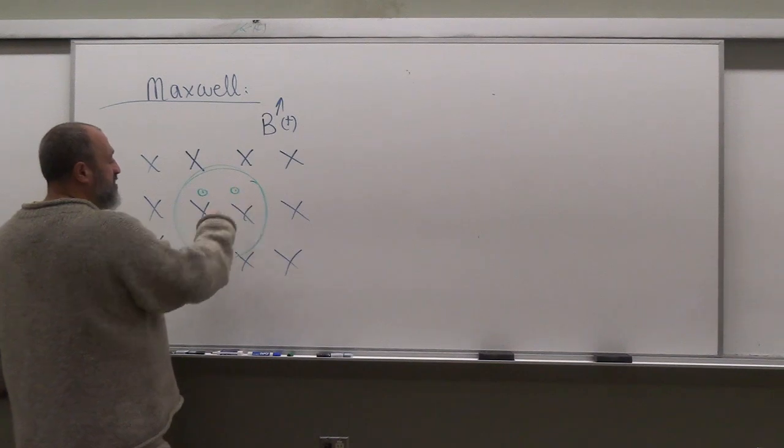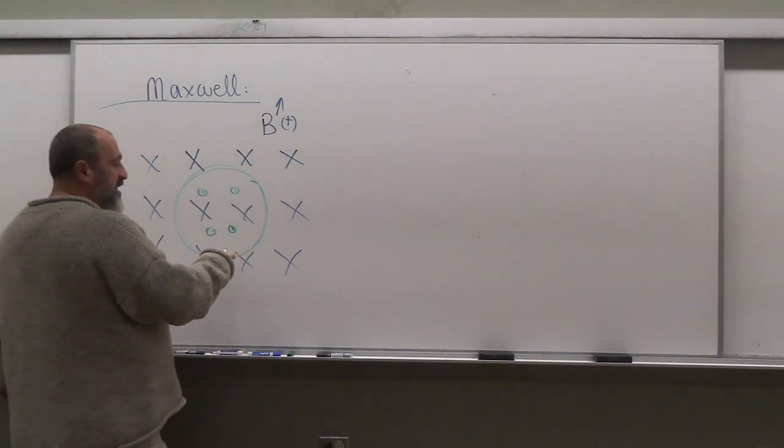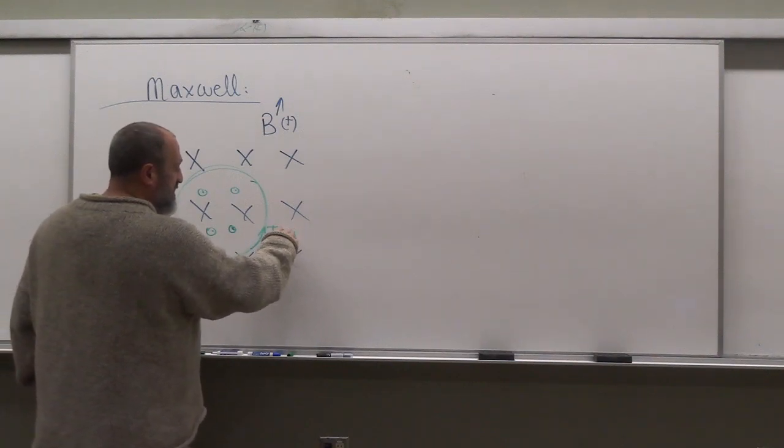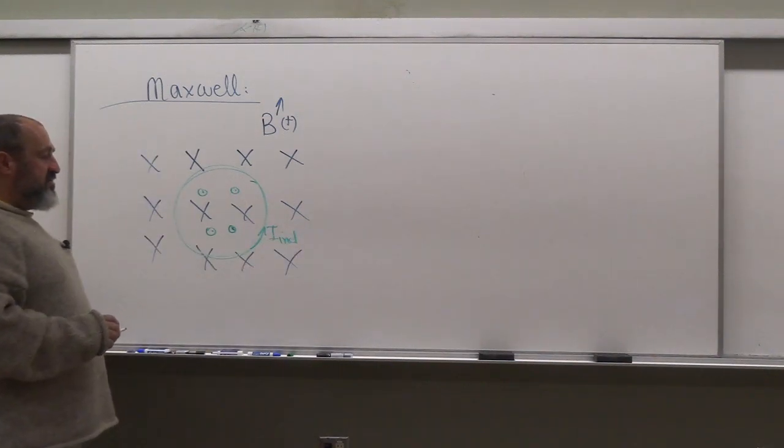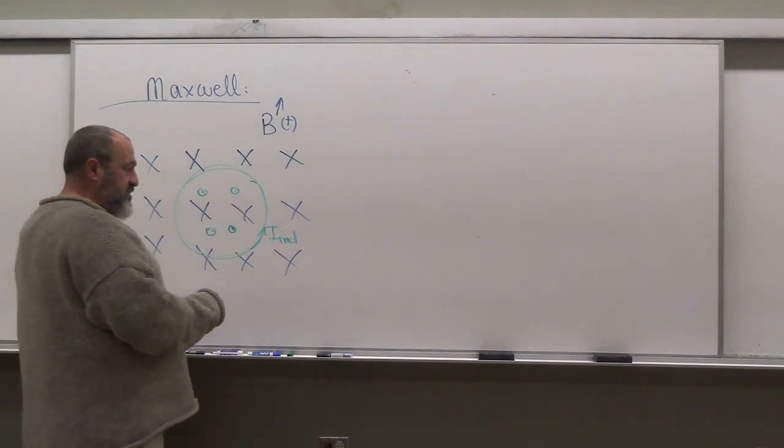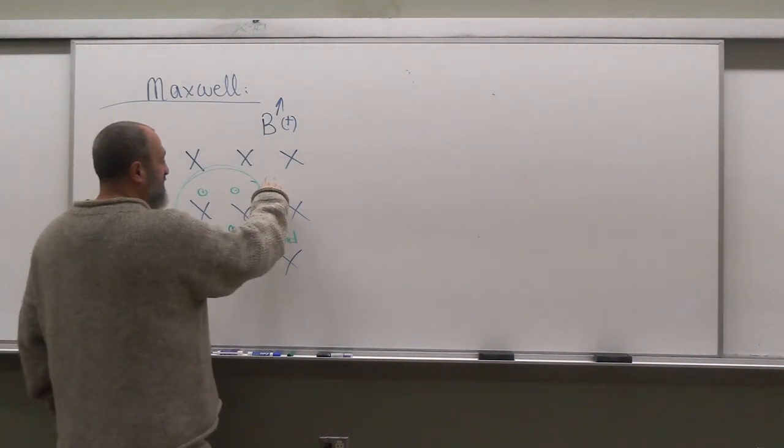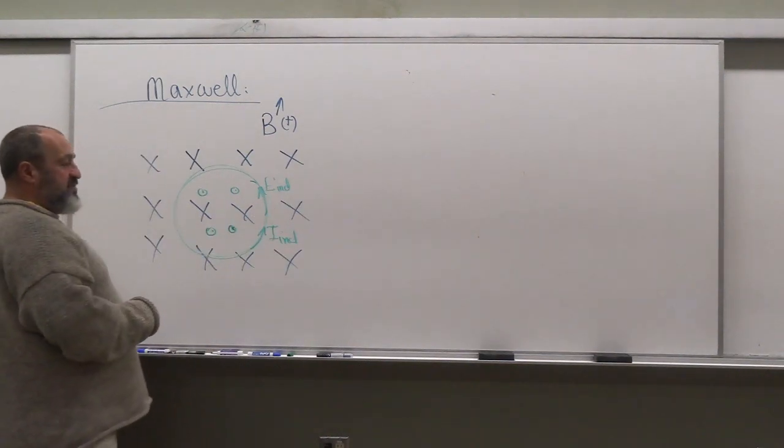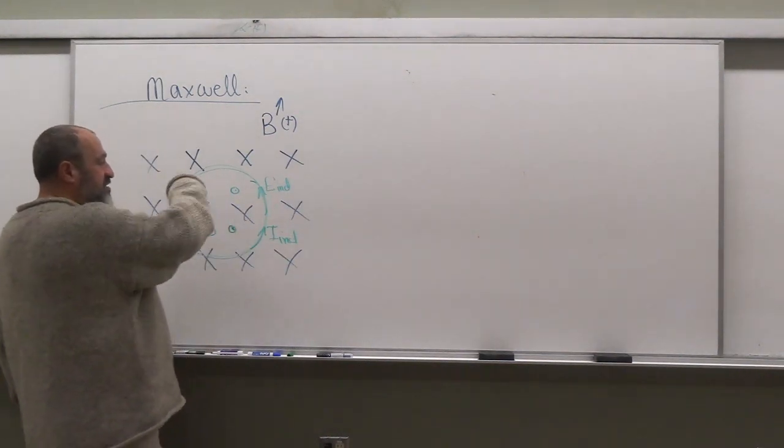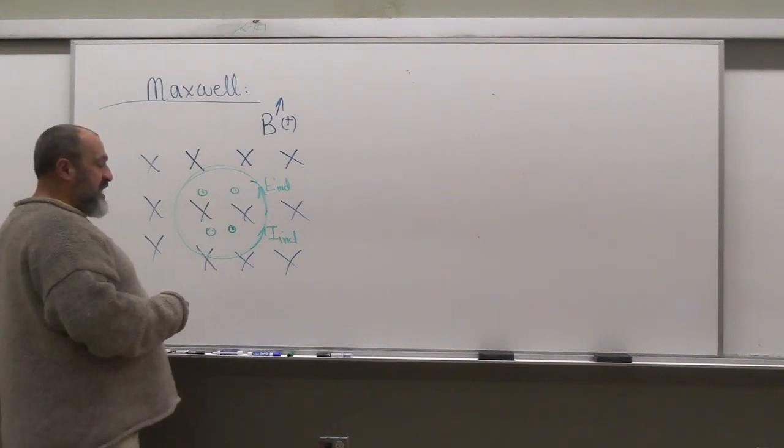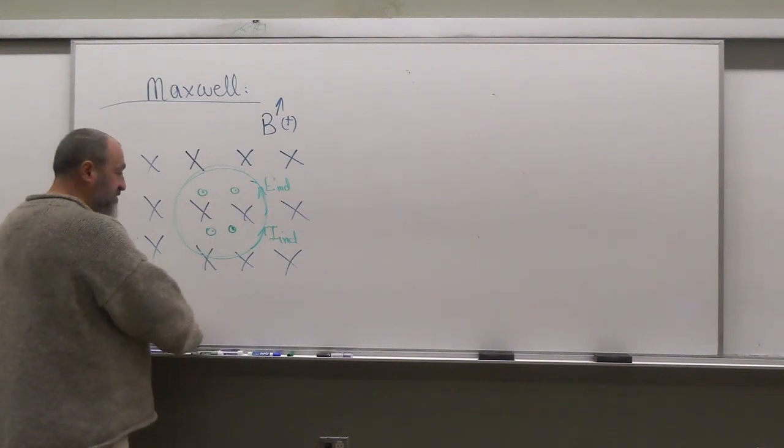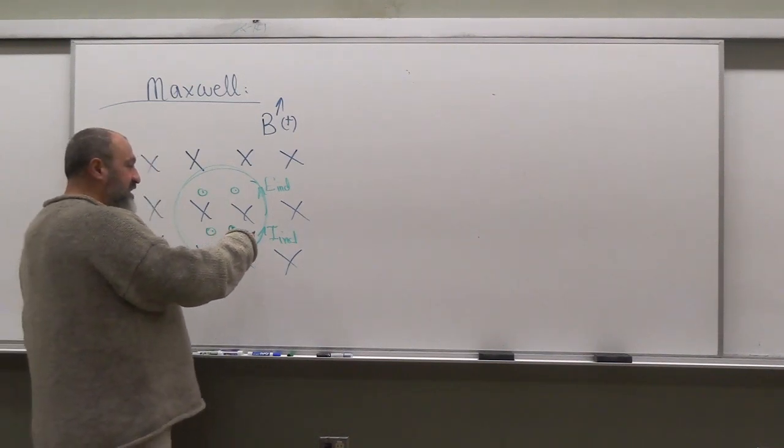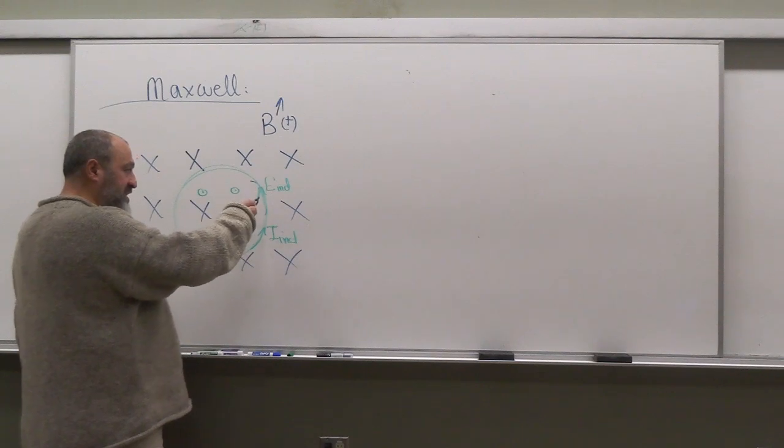And that has to come from a current, an induced current that must be flowing this way. But keep in mind that the only reason you have an induced current flowing this way is because there's an electric field, an electric field pointing this way induced. And your EMF across the loop is the integral of E dot dL. So what this is telling us basically is it's not that you have field because you have current, you have current because you have field.